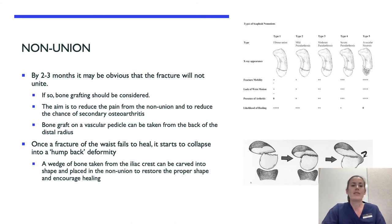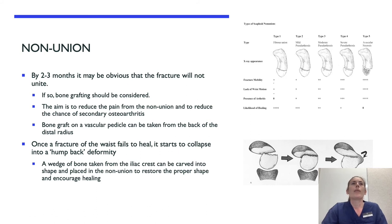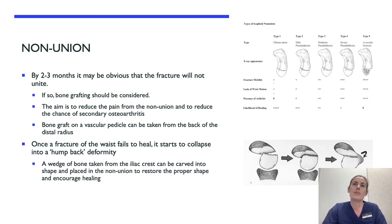With non-union: by two to three months it may be obvious that the fracture will not unite, and if so, bone grafting should be considered. The aim is to reduce pain from the non-union and reduce the chance of secondary osteoarthritis. The bone graft on a vascular pedicle can be taken from the back of the distal radius. Once a fracture of the waist fails to heal it starts to collapse into a humpback deformity, and a wedge of bone taken from the iliac crest can be carved into shape and placed at the non-union to restore proper shape and encourage healing.